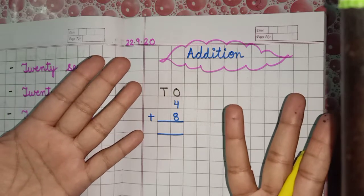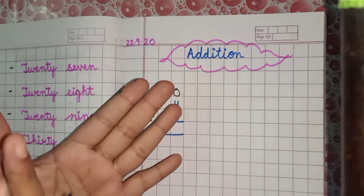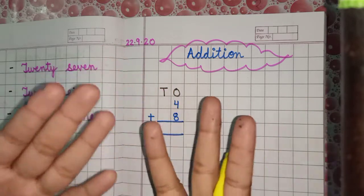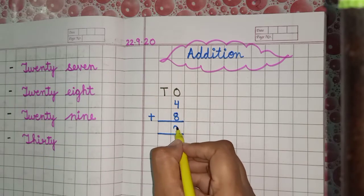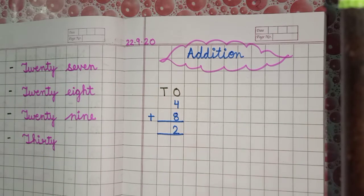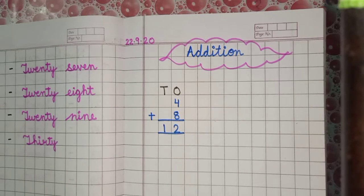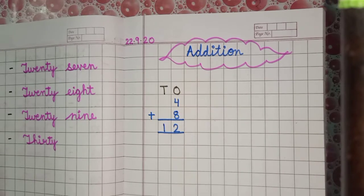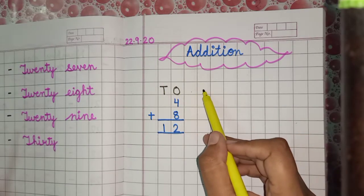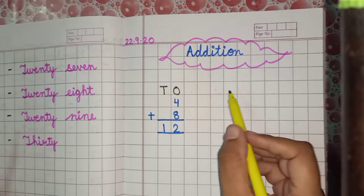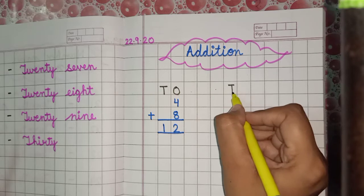Four plus eight: five, six, seven, eight, nine, ten, eleven, twelve. Write twelve — two under the place of ones and one under the place of tens. Now leave three lines — one, two, three — three boxes to leave.